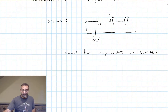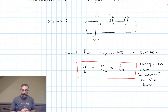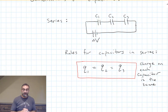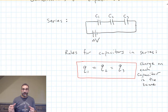Let's start with series circuits. If our capacitors are hooked up in series, the charge on every capacitor has to be the same. The charge on C1 equals the charge on C2 equals the charge on C3. So the charge on each capacitor is going to be the same, even if these capacitors have different values for their capacitance. And the charge on each capacitor is equal to the total charge in the system.